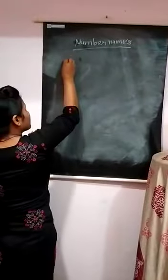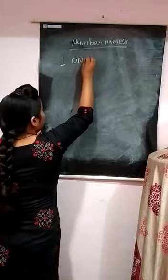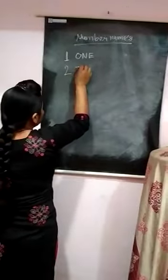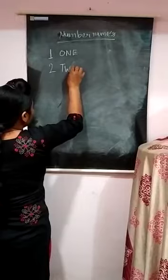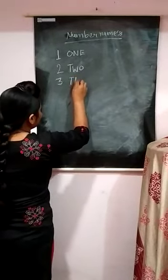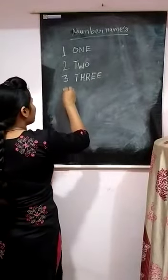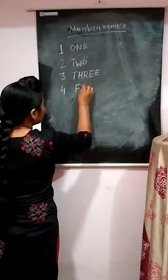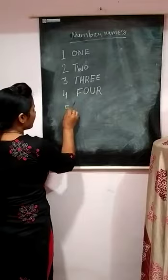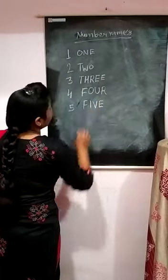Number names. One — O, N, E — one. Two — T, W, O — two. Three — T, H, R, double E — three. Four — F, O, U, R — four. Five — F, I, V, E — five.